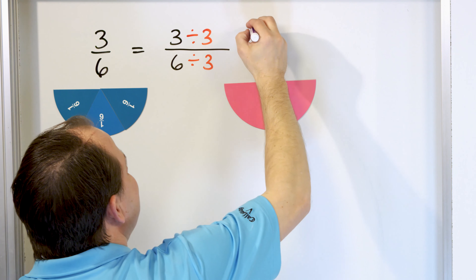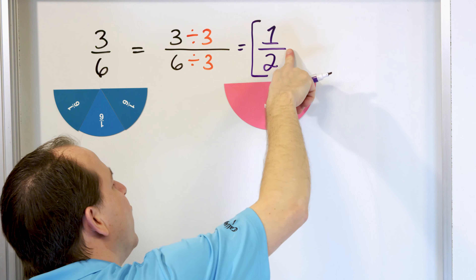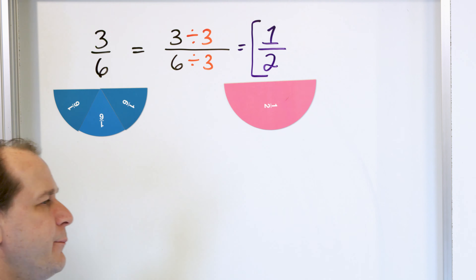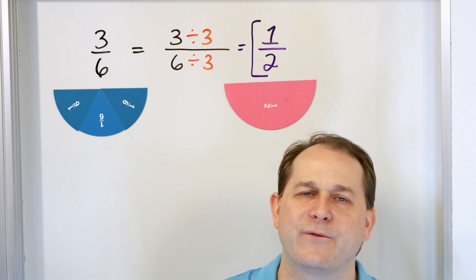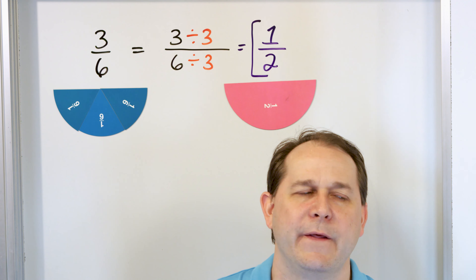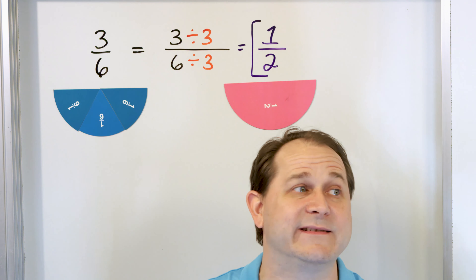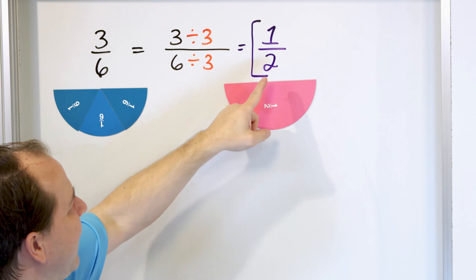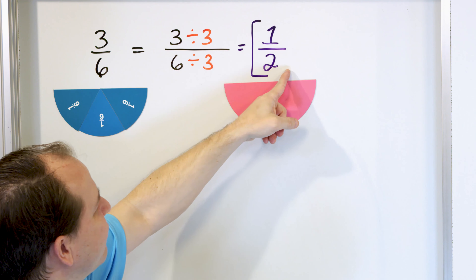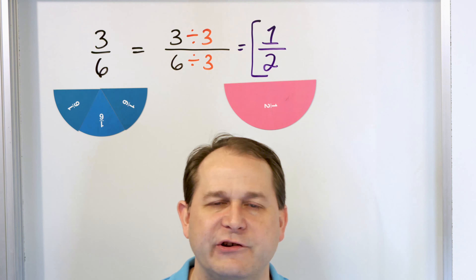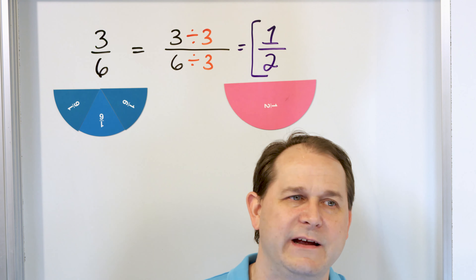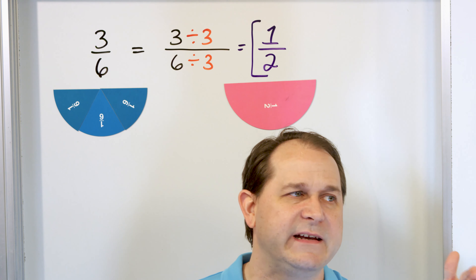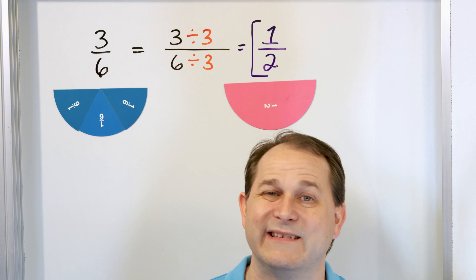This is the simplified form, or the lowest terms form, of the original fraction. It's important for you to understand that the fractions mean the same thing — three-sixths really does mean exactly the same amount of stuff as one-half. But when we give answers in problems, we usually want to show the simplified version of the fraction in lowest terms. We always want to simplify as the final step.